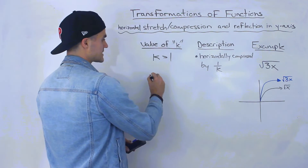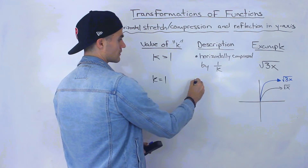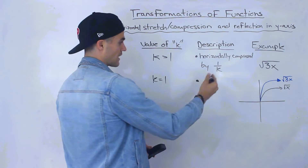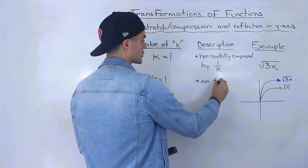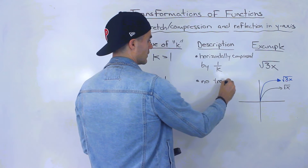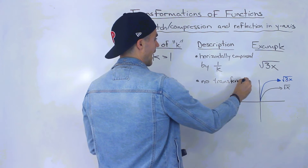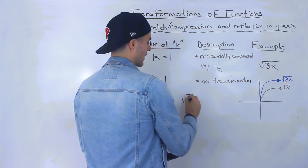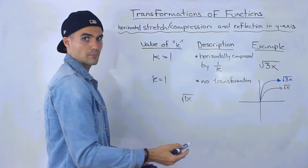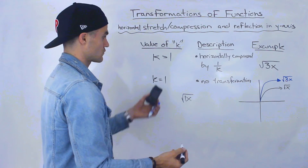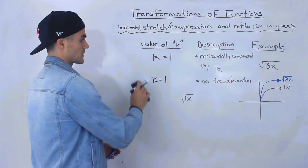If k is equal to 1, just like when a equals 1, there's no transformation — we still just have the square root of x with a 1 in front of x. So if k is 1, there is no transformation.